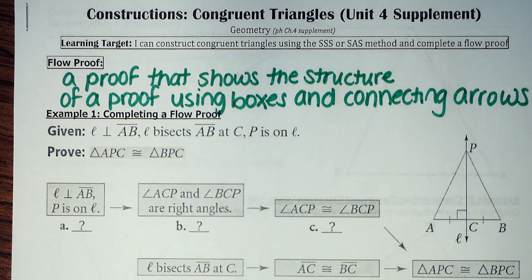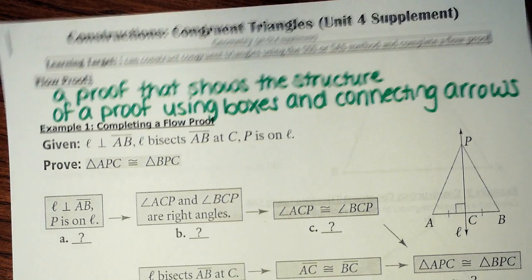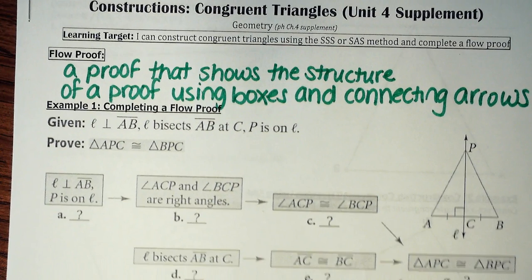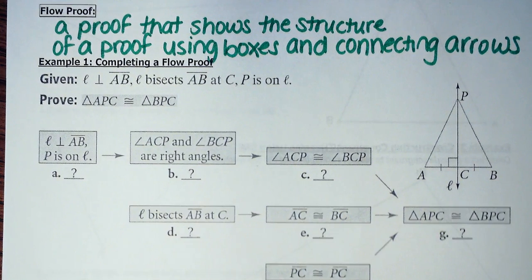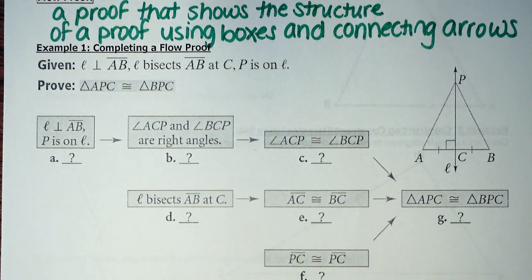This is just called a flow proof, and I have the definition already written, so if you need to pause this, feel free. But a flow proof, it's just a proof, and it's going to show the structure of the proof with boxes and connecting arrows. So if you want to look right below my definition, this is what a flow proof looks like.